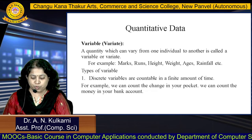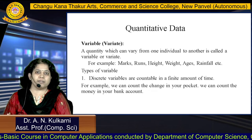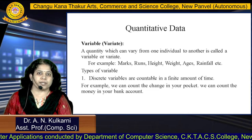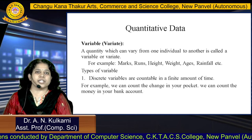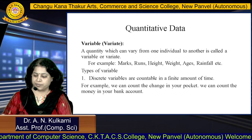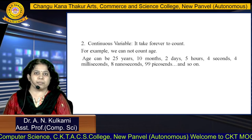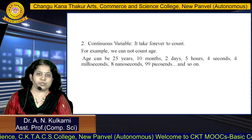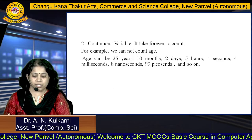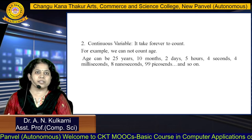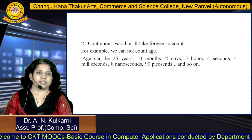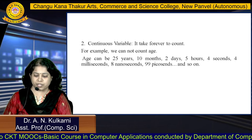Under variables, there are different types. Discrete variables are countable in a finite amount of time. For example, we can count the change in your pocket or the money in your bank account. Continuous variables take forever to count. For example, we cannot count age precisely, because age can be 25 years, 10 months, 2 days, 5 hours, 4 seconds, 4 milliseconds, 8 nanoseconds, 99 picoseconds, and so on — so it comes under continuous variable.